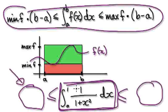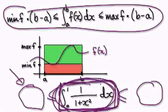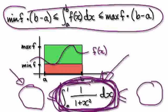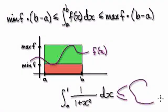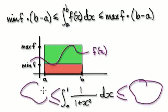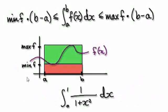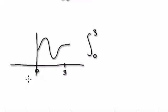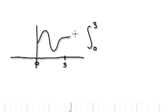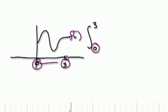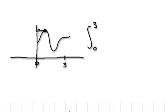By trapping it in between two things, we can roughly estimate the value of this integral here. The aim here is to trap it between the biggest thing and the smallest thing. The way we trap something is, suppose you have a function f of x, in between zero and three. The trick is to obtain the highest value.